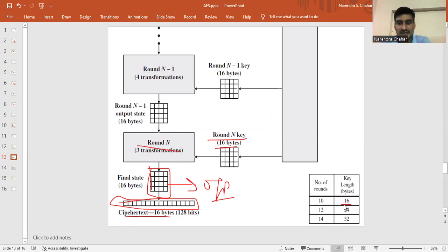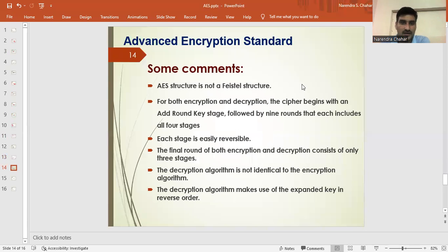What are the number of rounds for each key length? If you take the key length as 16 bytes, number of rounds are 10. Then we take the key length 24 bytes, then the rounds are 12. And in 32 bytes, there is 14. 16 is 128-bit key, this is 192, and this is 256.